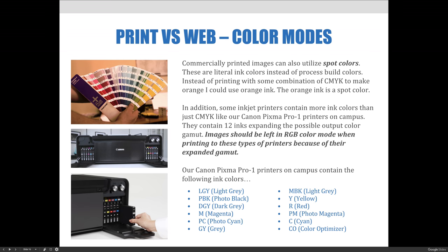Images should be left in RGB color mode when printing to these types of printers because of their expanded gamut. Our Canon Pixma Pro 1 printers on campus contain 12 ink colors: light gray, photo black, dark gray, magenta, photo cyan, gray, light gray, yellow, red, photo magenta, cyan, and a color optimizer.